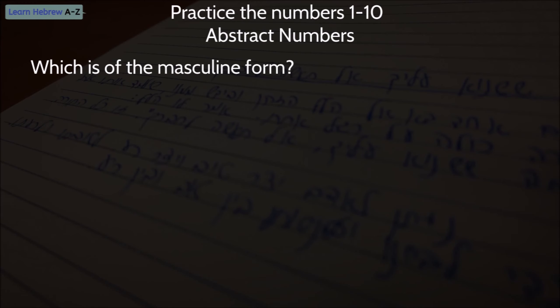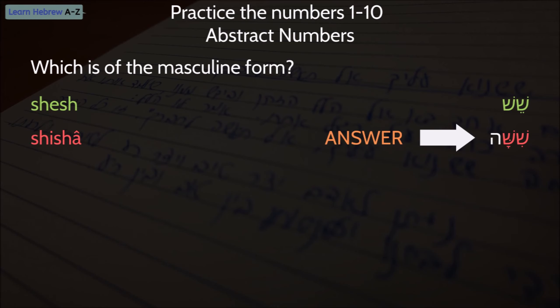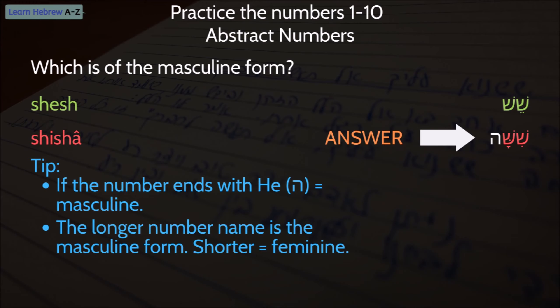Let's try another one. Which of the following numbers is in its masculine form — Shesh or Shisha? Pause the video and think about the answer. The answer is Shisha. Notice the letter He at the end of the correct number name. The letter He at the end of the number name indicates the masculine separate form. This is true only for numbers 1 to 10.